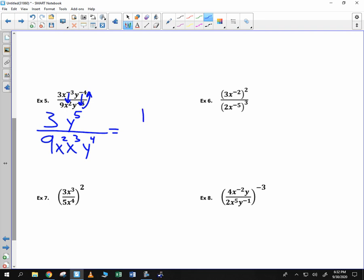Now, we can simplify this. 3 over 9 is 1 over 3. Looks like the x has become x to the fifth in the denominator. But, in the numerator, we have just one y. You could just write it as y if you want to as well.